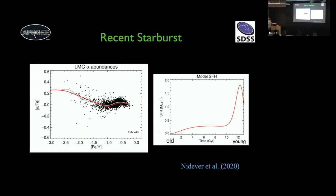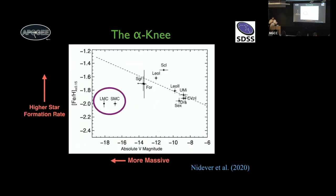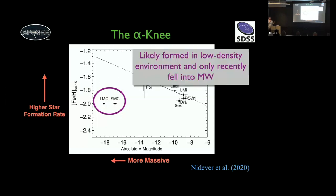This is a great time to switch to star formation histories, but first: comparing the Magellanic Clouds to the rest of the dwarf galaxies — with star formation rate increasing upward and mass to the left — they fall way off the trend of other satellites. For their mass, the alpha knee should be much more metal-rich. We think this is because they formed in a low-density environment and only recently fell into the Milky Way, consistent with the first-infall scenario.